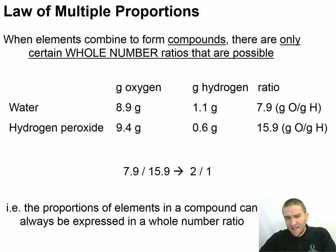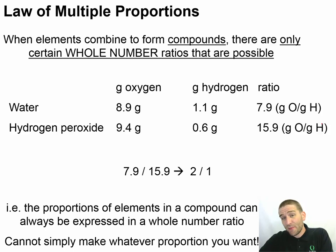But that's something that's kind of neat. The proportions of the elements in a compound can always be expressed by some whole number ratio. And we can't just make up any portion we want. We're not going to find something like H0.5. That's just not going to happen.